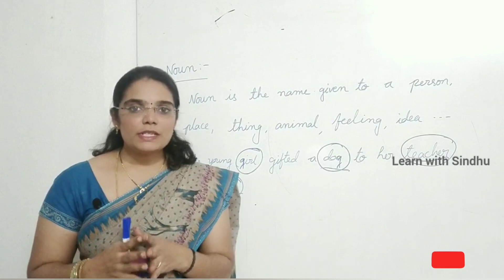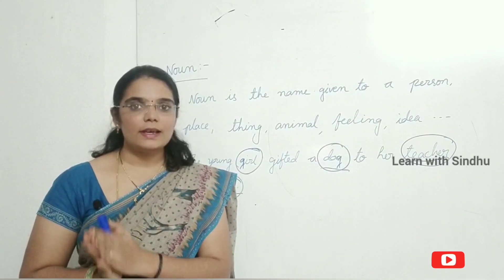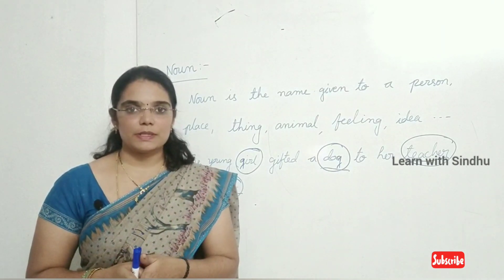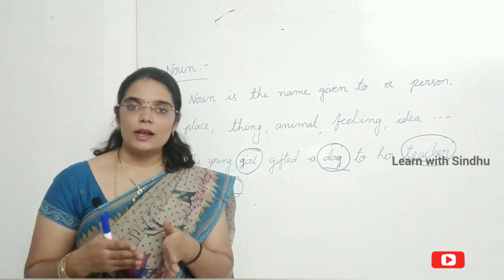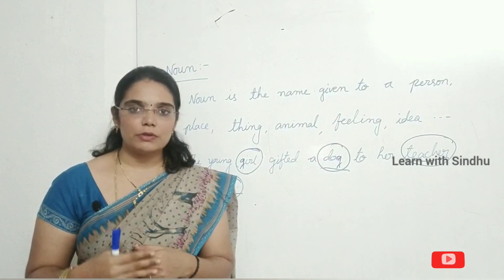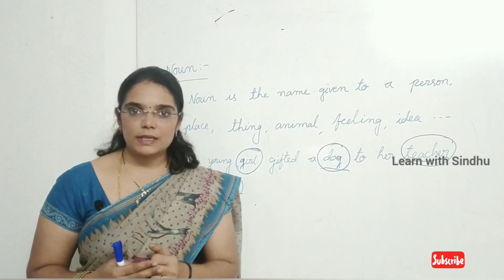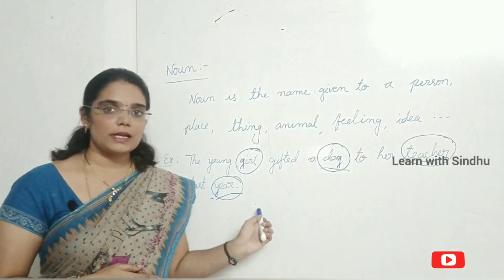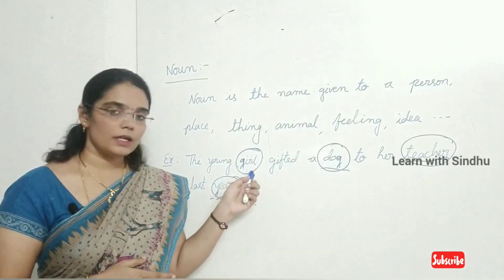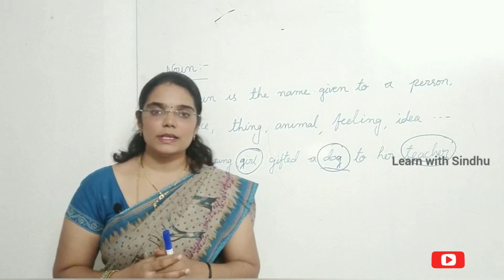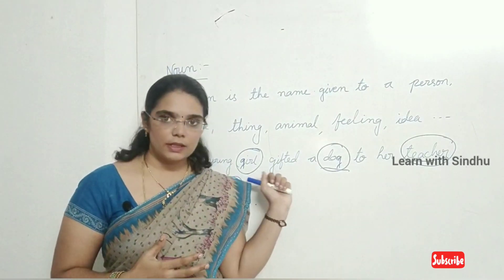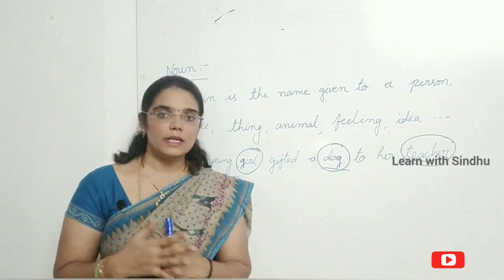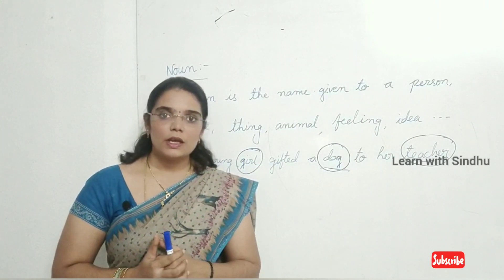Now we will see noun. Noun is the name given to a person, place, thing, animal, feelings, ideas, etc. The names we give to persons, things, places, animals, and also feelings like love, anger, ideas — all these names are called nouns. For example: The young girl gifted a dog to her teacher last year. The nouns here are: girl, dog, teacher, year. 'Girl' is a person, 'dog' is an animal, and so on.